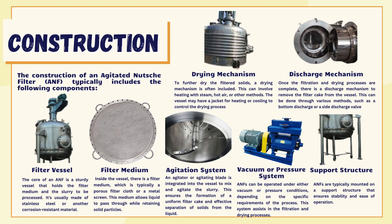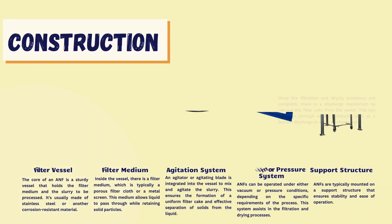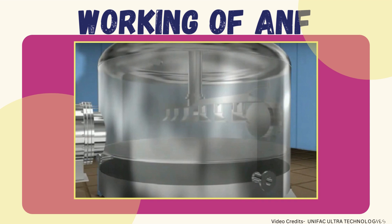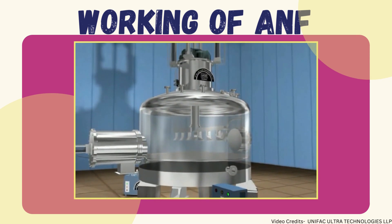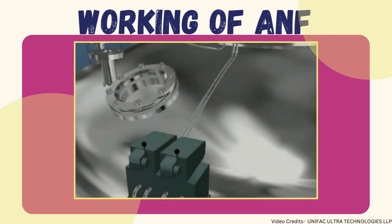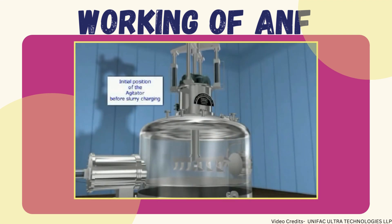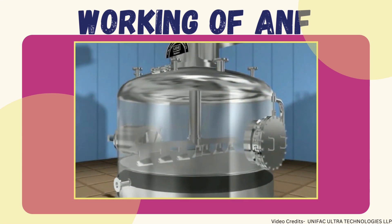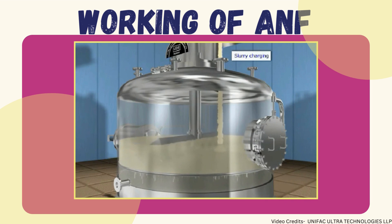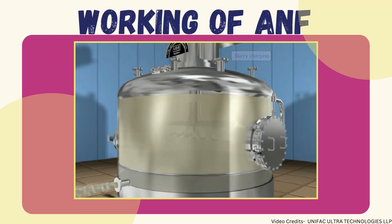Now we'll be moving on to the working of ANFs. The working procedure of ANF starts with the feeding stage. Before feeding the slurry into the ANF, the position of the agitator is shifted to the bottom. It is then made to rotate in the scraping direction, that is in a clockwise manner. As the level of slurry in the ANF increases, you need to also raise the agitator level — moving it from the bottom position to the top position in parallel with the increasing mass in the vessel.